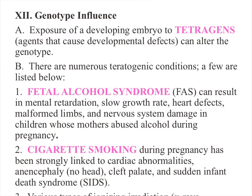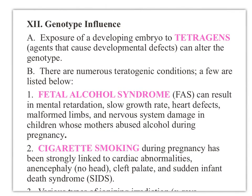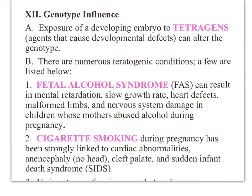There are some things that will influence your genotype. When you're pregnant and the embryo is developing, there are things called teratogens that can cause developmental defects and alter the baby's genotype. A teratogen would be things you're not supposed to do when you're pregnant. Everyone knows you're not supposed to drink alcohol or smoke cigarettes while you're pregnant — both of those are considered teratogens that produce teratogenic conditions.